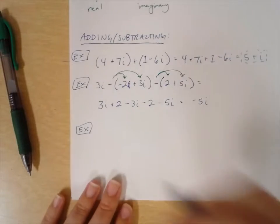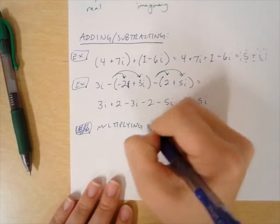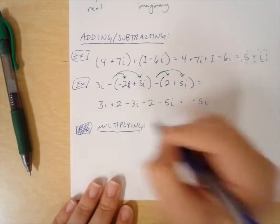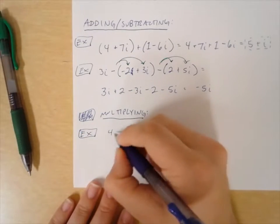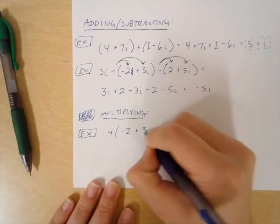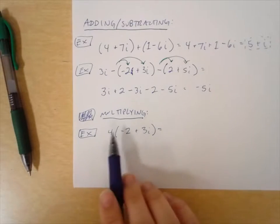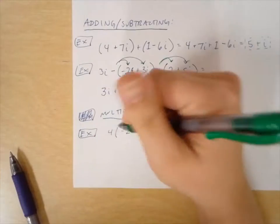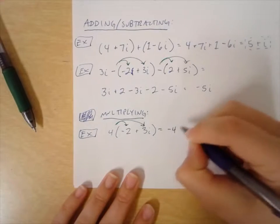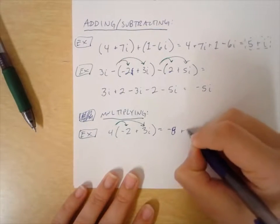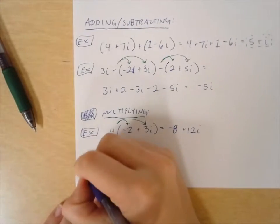Let's talk about multiplying complex numbers. What we can do here is, again, the same properties as with polynomials. If we were multiplying something outside parentheses, we know that we would have to distribute the 4, and that's exactly what we're going to do. It doesn't matter that i is there — we follow the same rules. So we get negative 8 plus 12i, and that's our answer. The distribution property is what helped us get there.